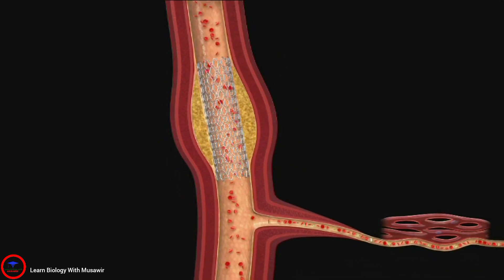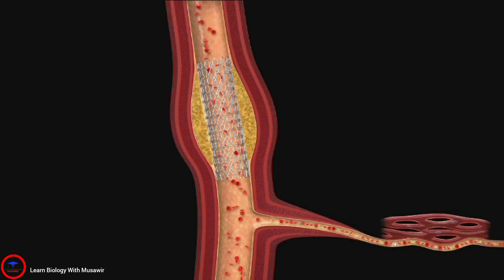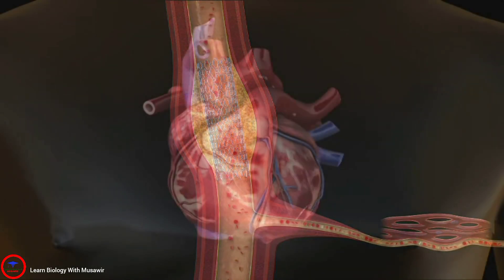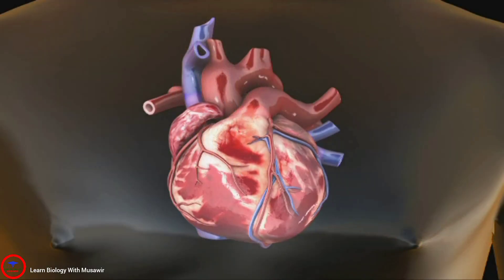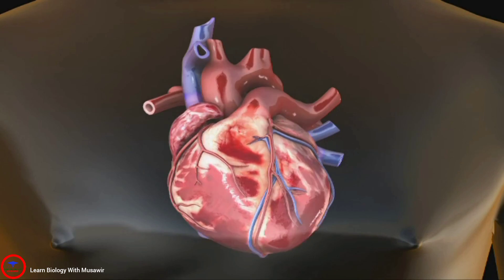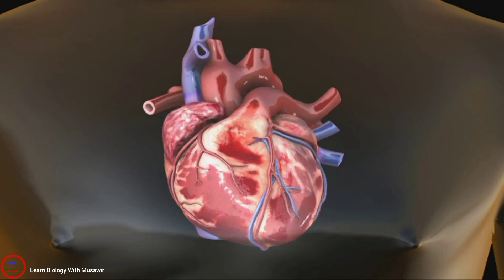The stent keeps the vessel open and stops the artery from collapsing. This improves blood flow to the heart muscle and can relieve your chest pain. The stent stays in the artery permanently. Some stents slowly release medication to help keep the artery open.